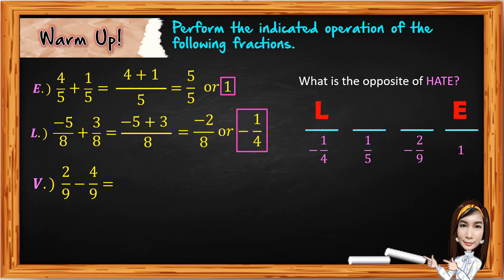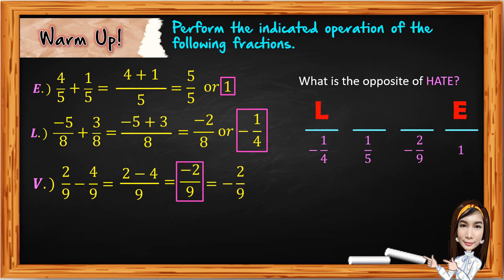Next, we have letter V: two over nine minus four over nine. We subtract the numerators — two minus four — then copy the common denominator nine. Two minus four equals negative two over nine. Since negative two and nine have no common factor, that is the lowest term. If we have a negative on the numerator, we can also write the negative sign on the fraction bar. We write letter V above negative two over nine.